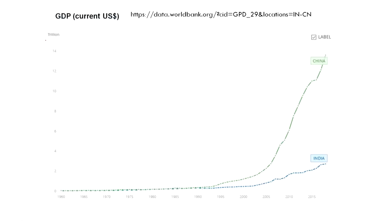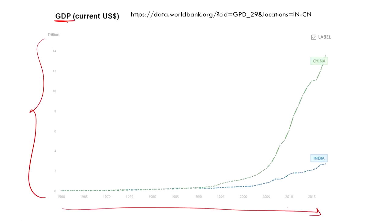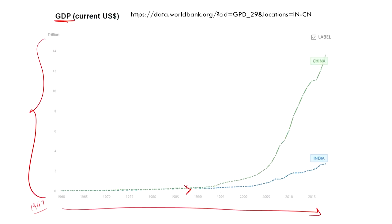On the y-axis we have GDP in trillion US dollars, and on the x-axis the year. Starting from 1947, when India gained independence — keep in mind the differences between democracy and authoritarian states, different modes of development, and levels of freedom. From around 1990, due to the policies of Jiang Zemin when China opened up its economy, China witnessed exponential growth.